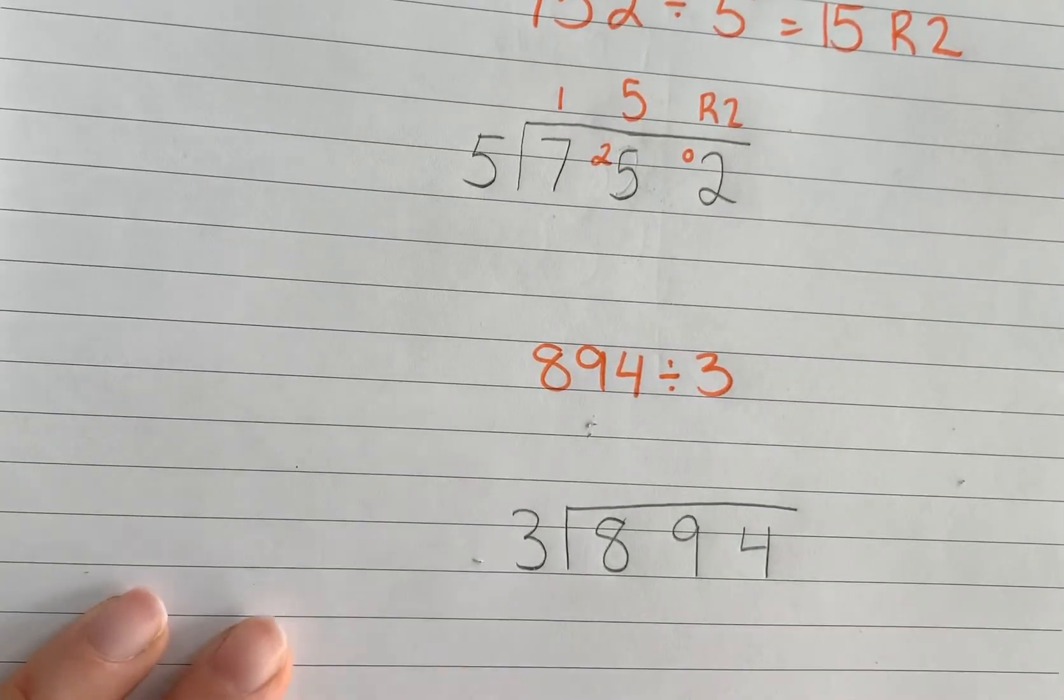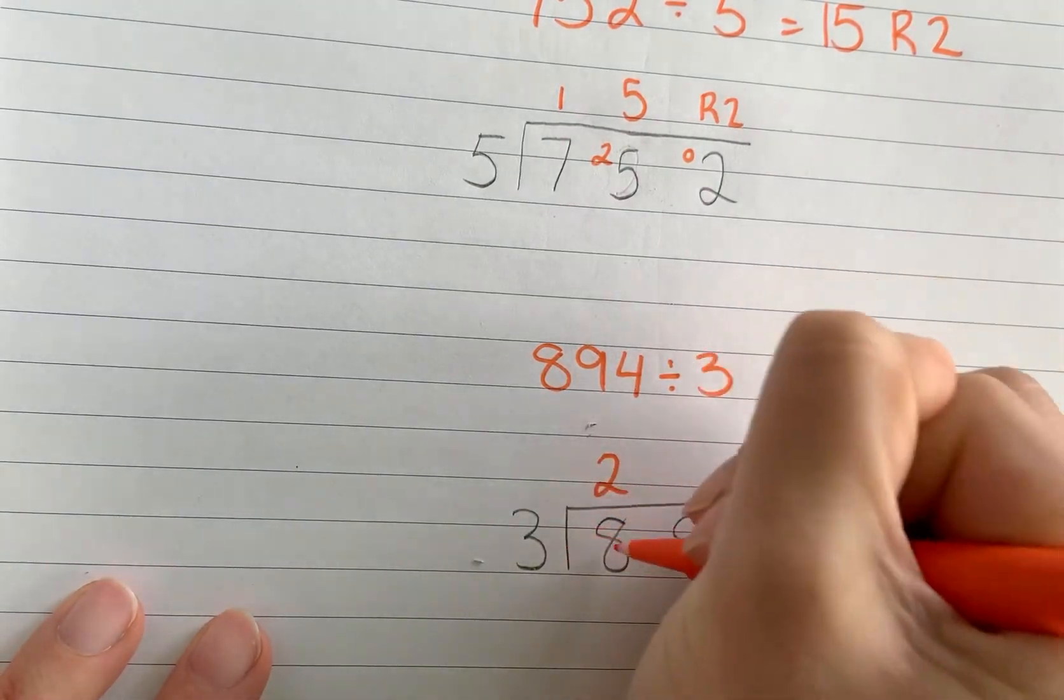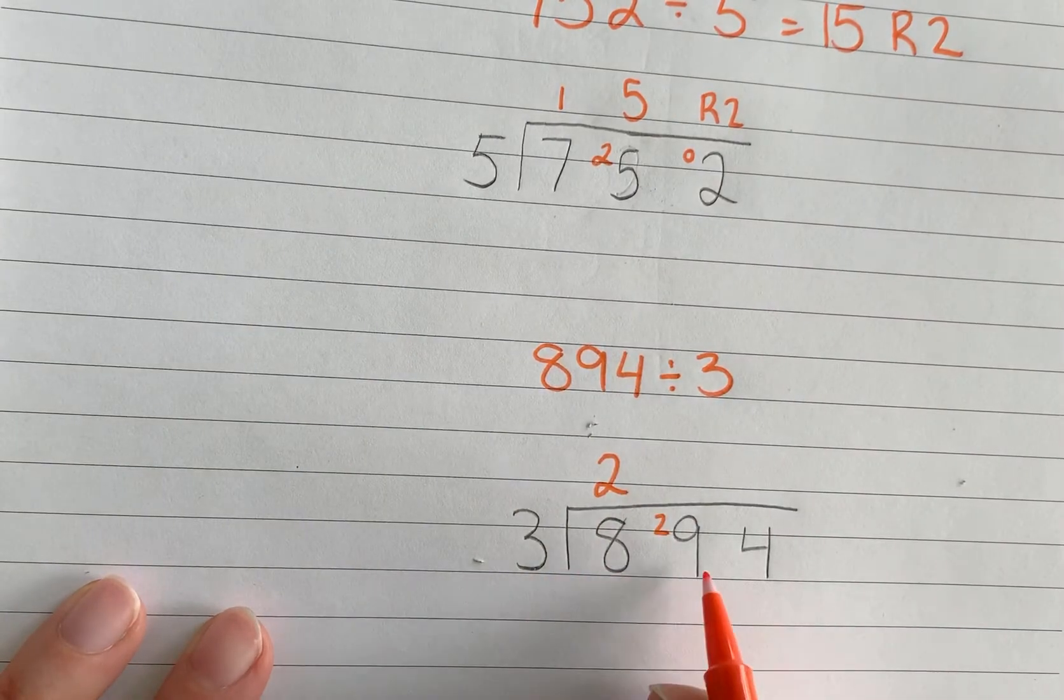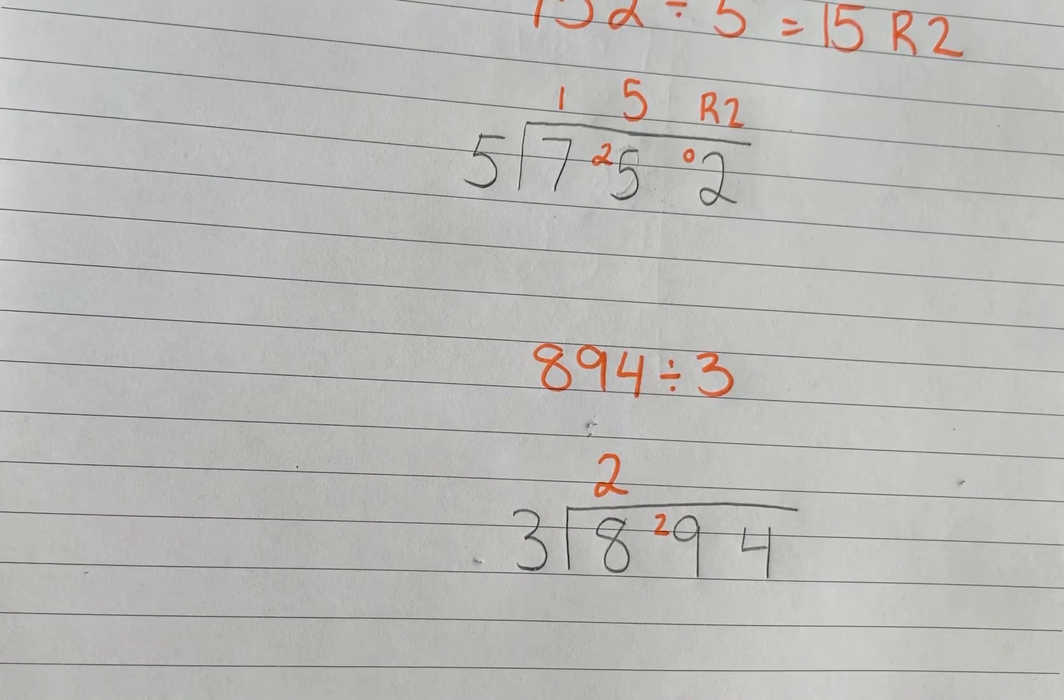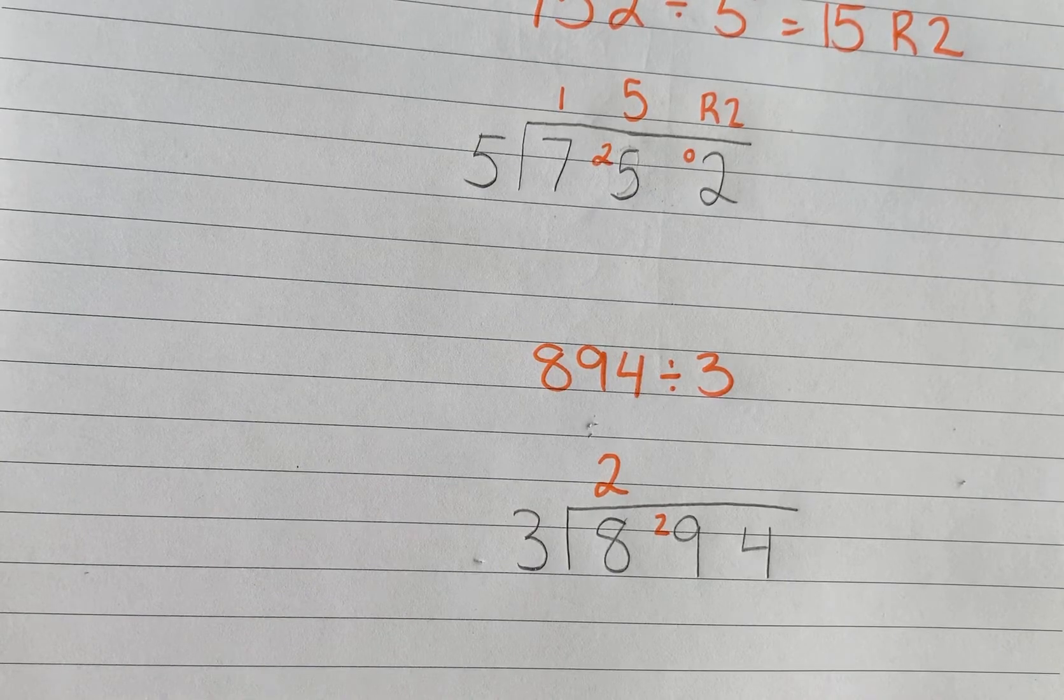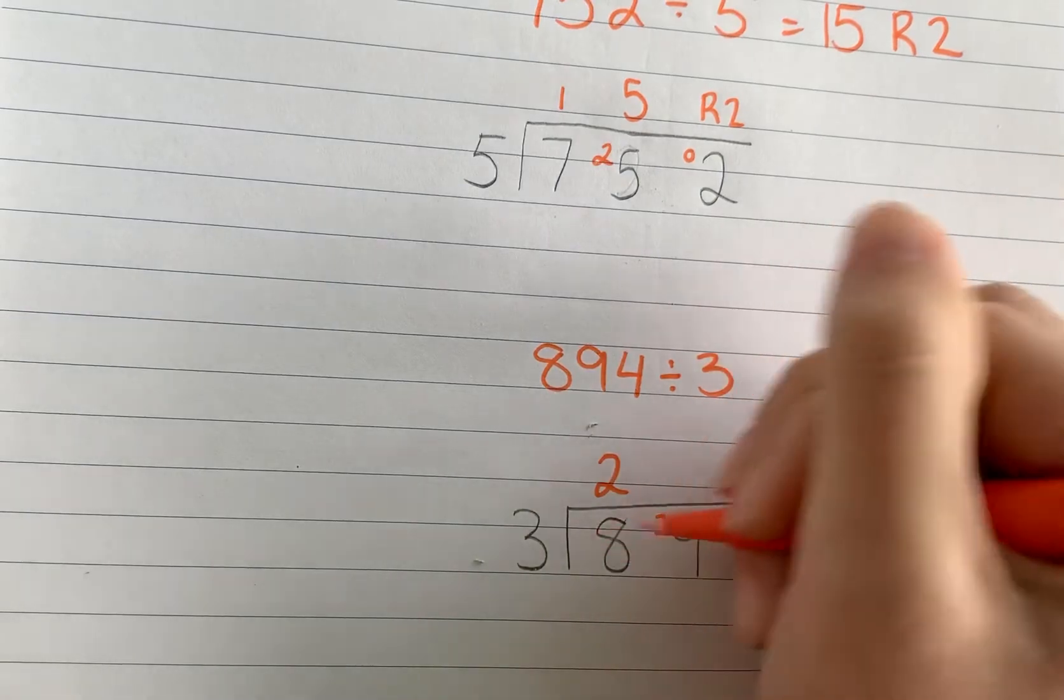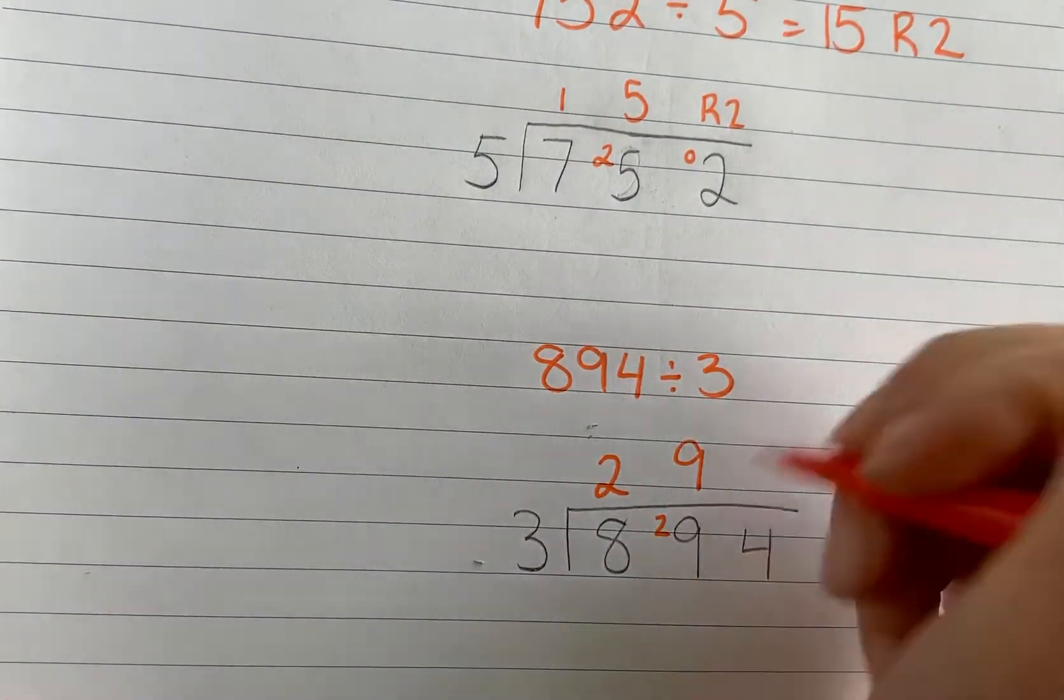Okay, 3 goes into 8. I know 3 times 2 is 6. 7, 8. I have 2 left over. 3 goes into 29. Well, I know that 8 times 3 is 24. Okay, too low. I know that 9 times 3 is 27. All right, that's as high as I can get. See that trial and error. So 9 times 3 is 27, which means I have 2 left over.